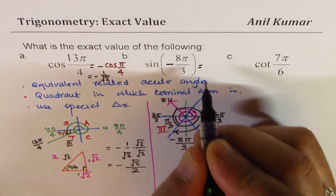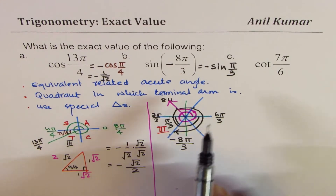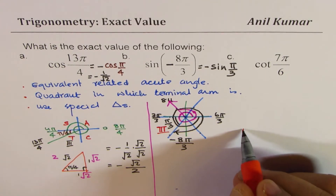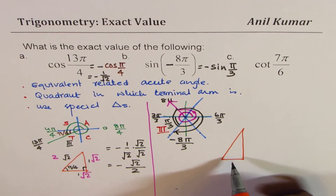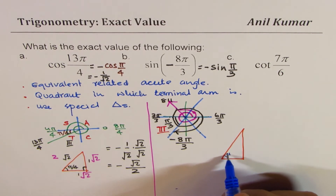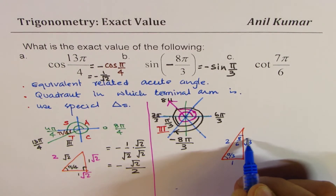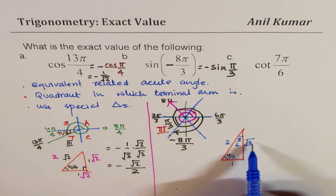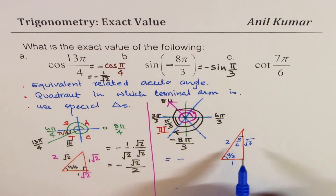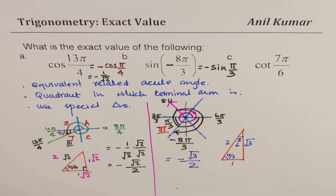So we can write this as -sin(π/3). Using the special triangle with angles π/3 and π/6 and sides 1, 2, and √3: the side opposite π/3 is √3, and the hypotenuse is 2. Therefore sin(π/3) = √3/2, and the answer is -√3/2.